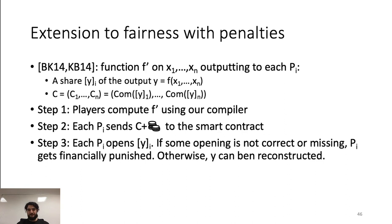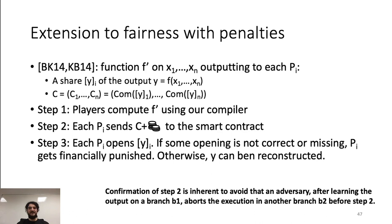To achieve fairness with penalties in our general compiler, players compute f prime, obtaining a share yi and the list c. Each player pi sends c together with the deposit to the smart contract. Since each party should have the same c, if one party sends a different value c prime, the smart contract will abort the execution. Each party pi opens their commitment in c and publishes the opening on the blockchain. If all parties open their commitment, the output can be reconstructed; if a party pj doesn't open or sends a bad opening, the smart contract will financially punish pj by freezing the deposit.